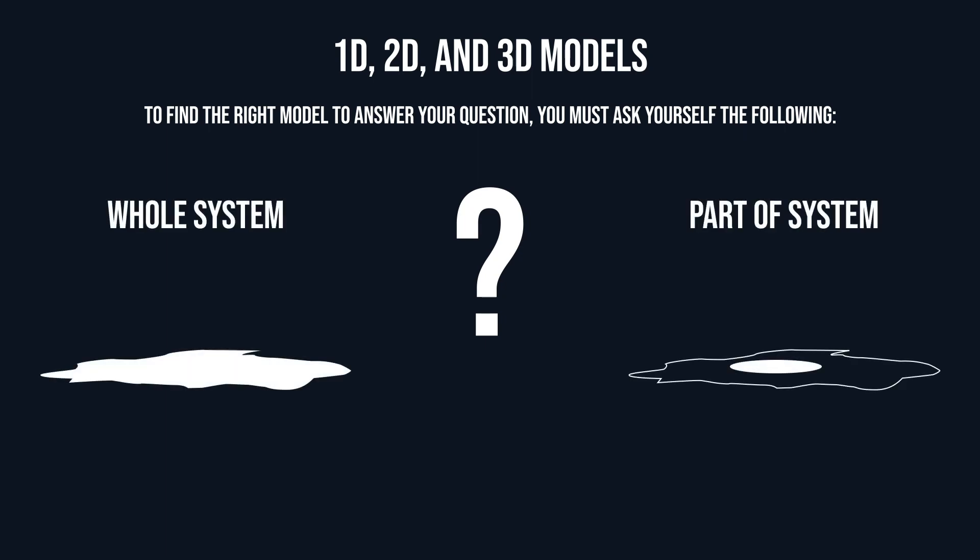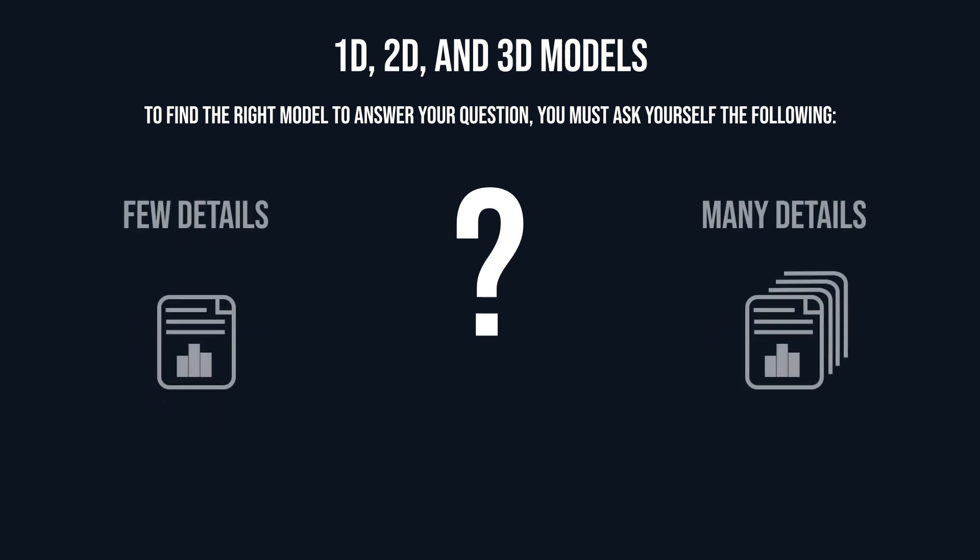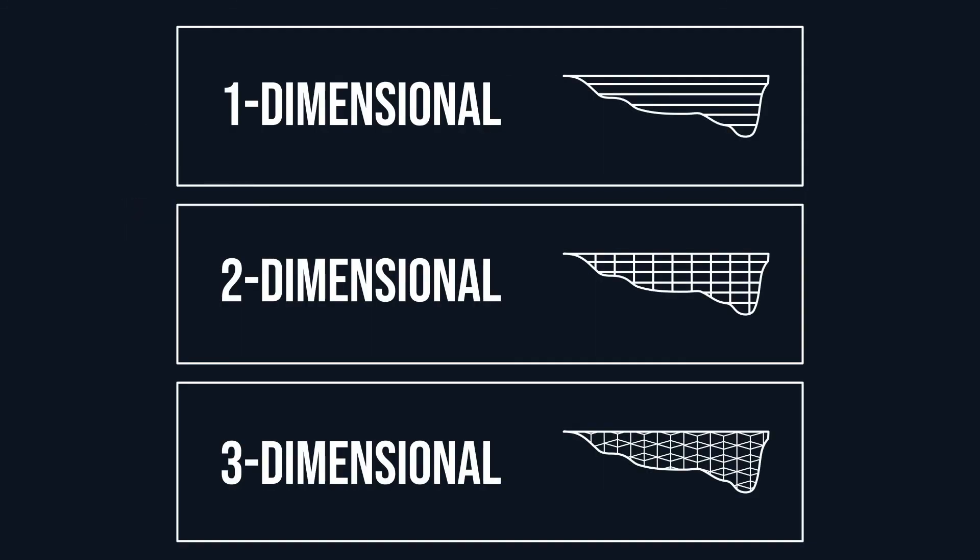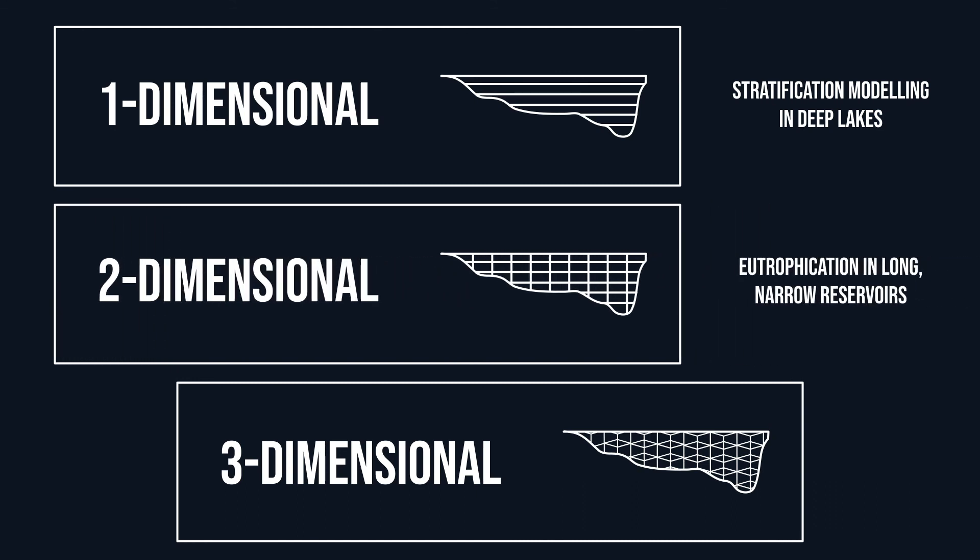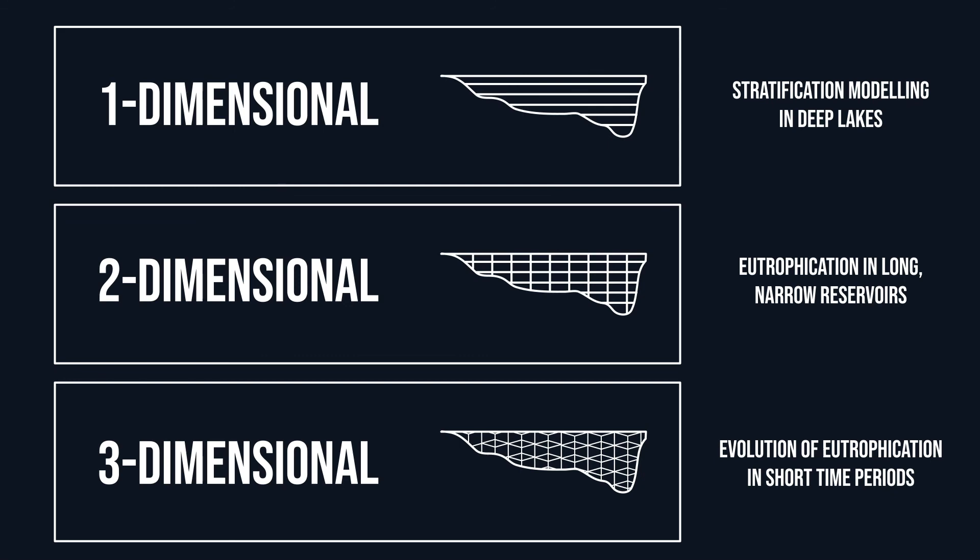And now, to sum up what we have learned in this video. To find the right model to answer your question, you must ask yourself the following. Are you focusing on the behavior of the whole system, or on the behavior of the individual parts of a system? Are you evaluating the short-term behavior and responses of a system to stressors, or are you hoping to gain insights into the long-term behavior of a system? What level of spatial, temporal, and biogeochemical details are required to address this specific research question? We brought several examples that help you gain insights into how to choose the right model. You saw that, for example, 1D models are helpful for stratification modeling in deep lakes, 2D models are suitable for modeling eutrophication in long, narrow reservoirs, and 3D models are great tools for forecasting the evolution of eutrophication in short time periods.